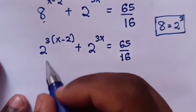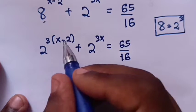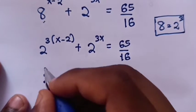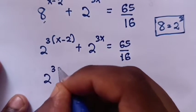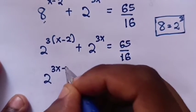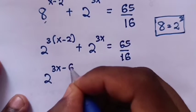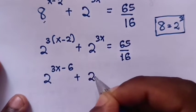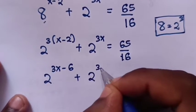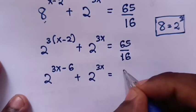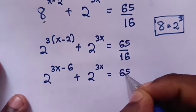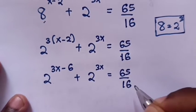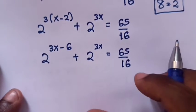We multiply the powers, so it becomes 2^(3x-6) + 2^(3x) = 65/16.